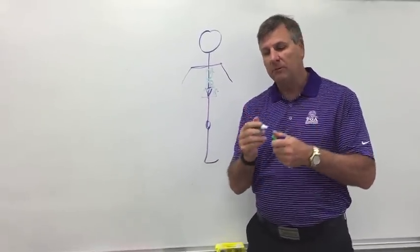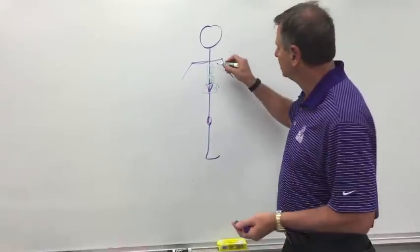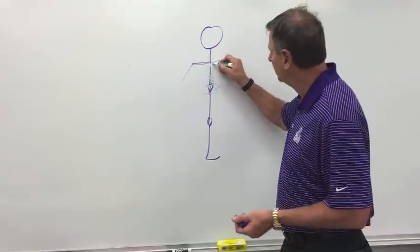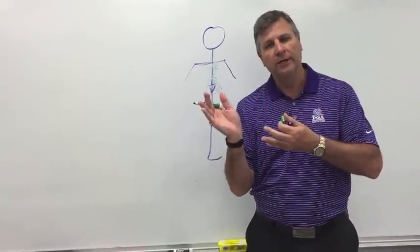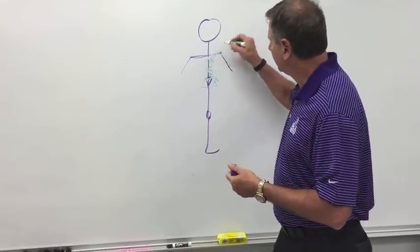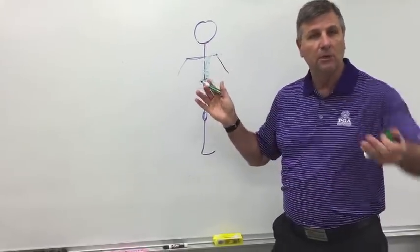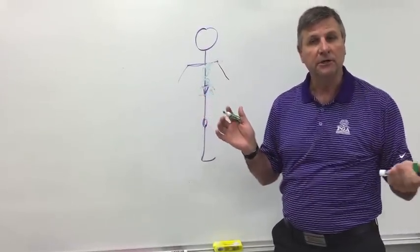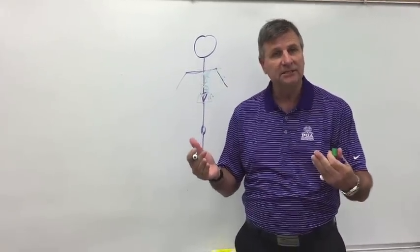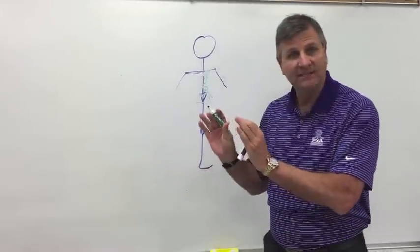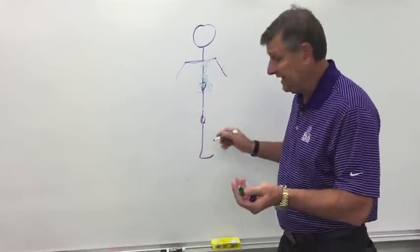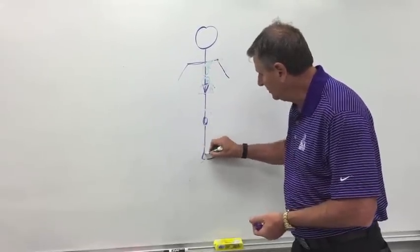Working up from the thoracic spine, we have our scapulothoracic articulation, which should be nice and stable. Moving out to the next joint, if the scapulothoracic is stable, the glenohumeral joint is mobile — it allows our humerus to move in space. Moving out one more to the elbow joint, a hinge joint, that should be nice and stable. Dropping down from the hip, which is mobile, the knee should be stable, and the hindfoot and ankle should be mobile.